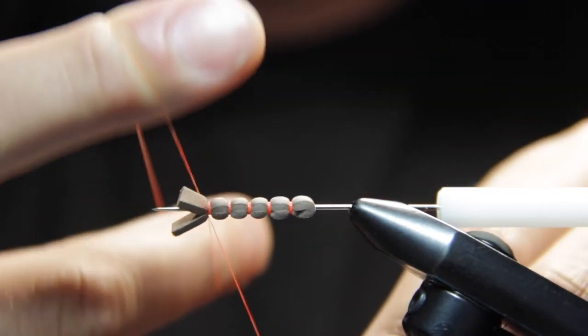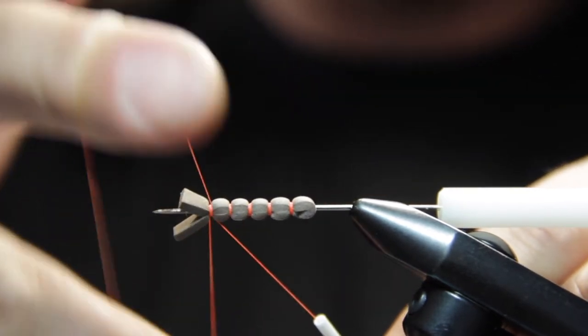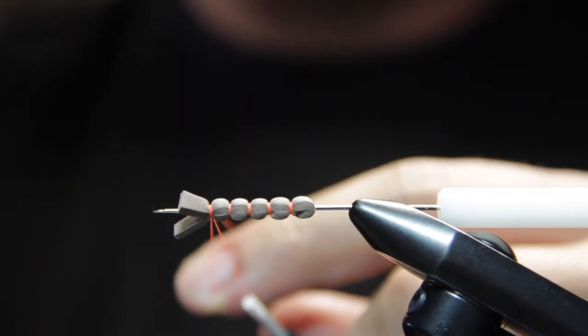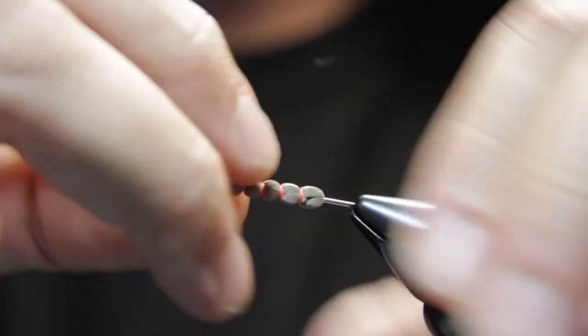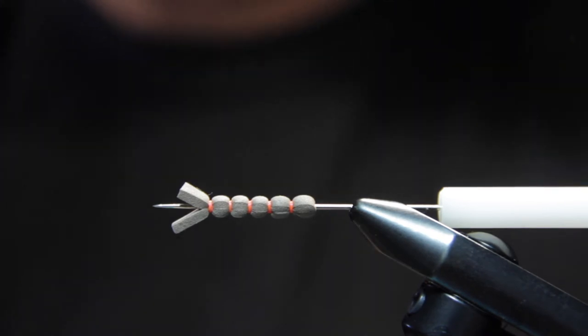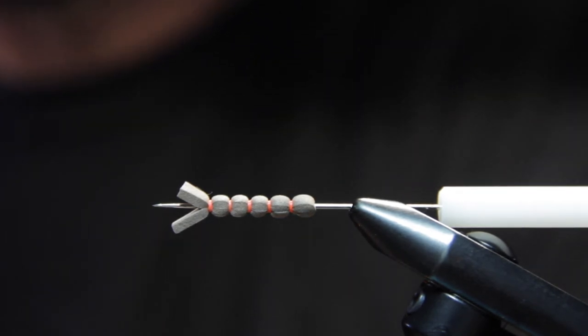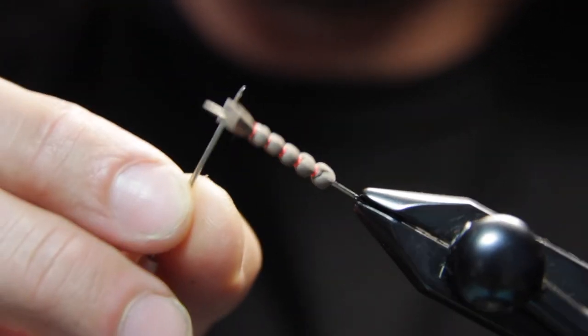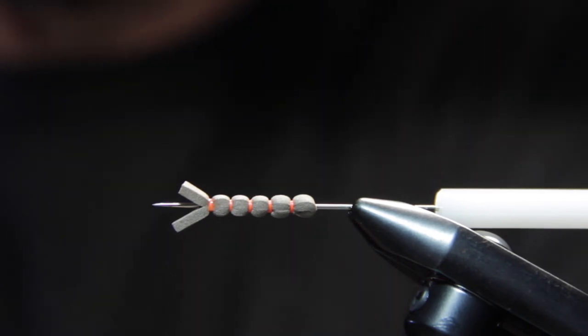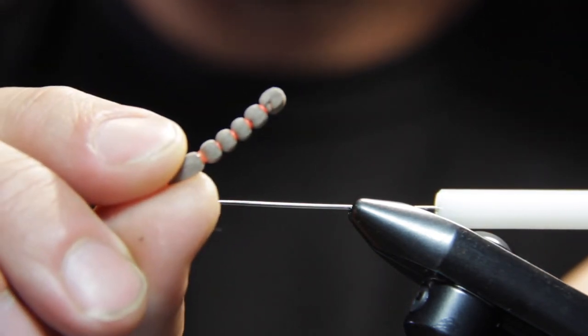So now we're going to whip finish here. Let's do a quick hand whip finish right through those, right in that last body segment there. Just like that. I'm going to add just a little bit of glue there. I usually like to make about a dozen of these or so, however many flies we plan on tying. Pull it off our bodkin and there it is.